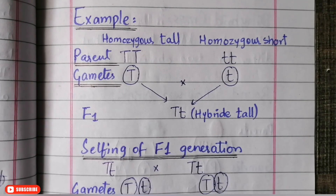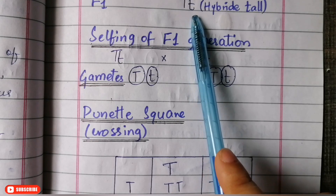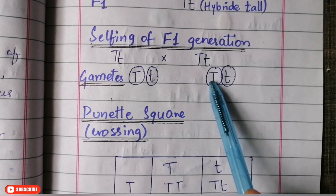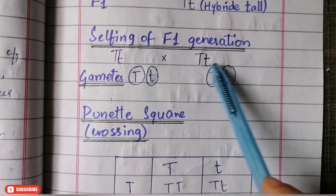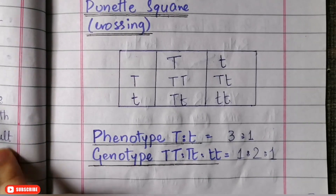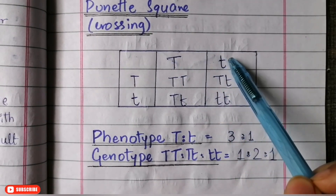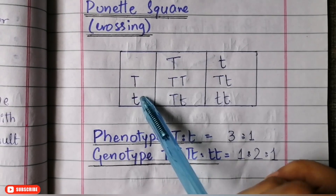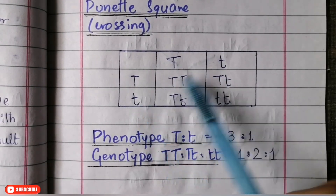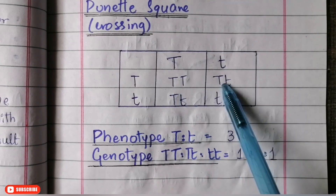Now we perform selfing of the F1 generation — crossing F1 with F1. Each F1 plant has genotype capital T, small t, so the gametes produced are capital T and small t. Using a Punnett square, we cross these gametes: capital T capital T, capital T small t, capital T small t, and small t small t are the four resulting boxes.